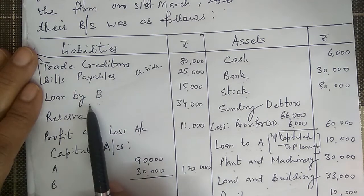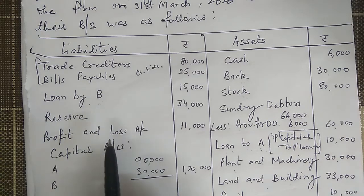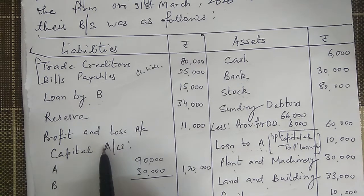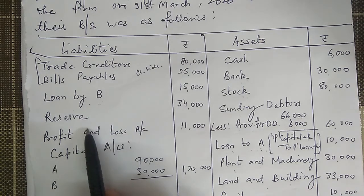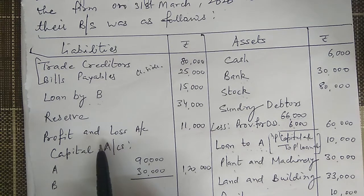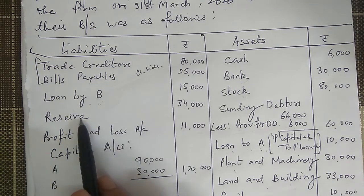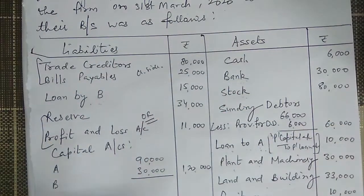Reserves — whether general reserve, normal reserve, or workman compensation reserve — whatever surplus remains after any claims is transferred to the partners' capital account in the old ratio. Similarly, profit and loss account balance is also transferred to the partners' capital account in the old ratio. Whatever the firm has to give to partners is credited; whatever is to be taken from partners is debited to the partners' capital account.